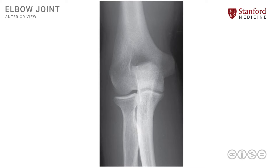Let's now look at a simple x-ray. This is a plain AP — anterior posterior — x-ray of the right elbow joint, and we can see some of the same structures again.